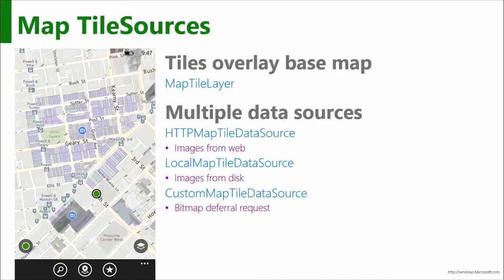We're talking about map tile sources. You can actually inject tiles into the composite view that the user is looking at at different places. You can replace the base map tiles — the layer that the mapping system is drawing for its base system: the buildings, roads, land. You can go and point at an HTTP map tile data source out on the web, so you're actually pulling tiles down from the web. You can have a local map tile data source, which means you're supplying a kind of cache.